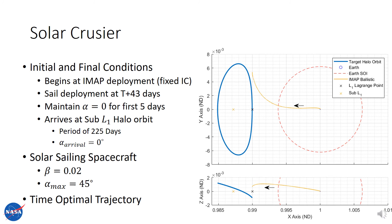Now that we've developed expected angle fraction, let's apply this to NASA's Solar Cruiser mission concept to see if we can make the trajectory more resilient to missed thrust events.